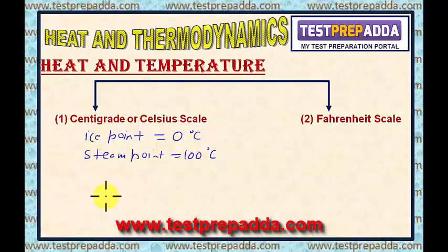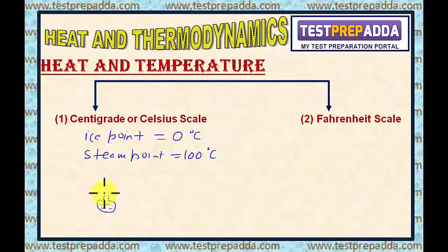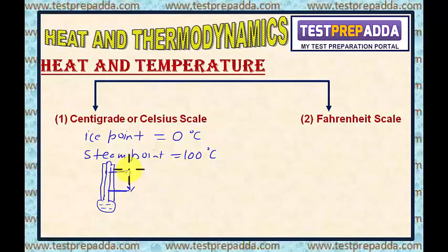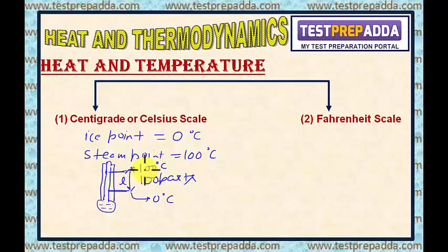If I show you: this is the bulb in which mercury is filled, connected to a long capillary with a glass support. The ice point is marked here and the steam point here. This length is divided into 100 equal parts. The ice point is taken as 0°C and the steam point as 100°C, so each part represents 1 degree Celsius.